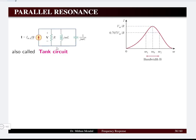In the parallel RLC network, where the resistance, inductance, and capacitance are in parallel with the source current taken as the source, that circuit is known as the tank circuit. We are going to study the resonance condition, and since it is a parallel circuit, it is known as parallel resonance.